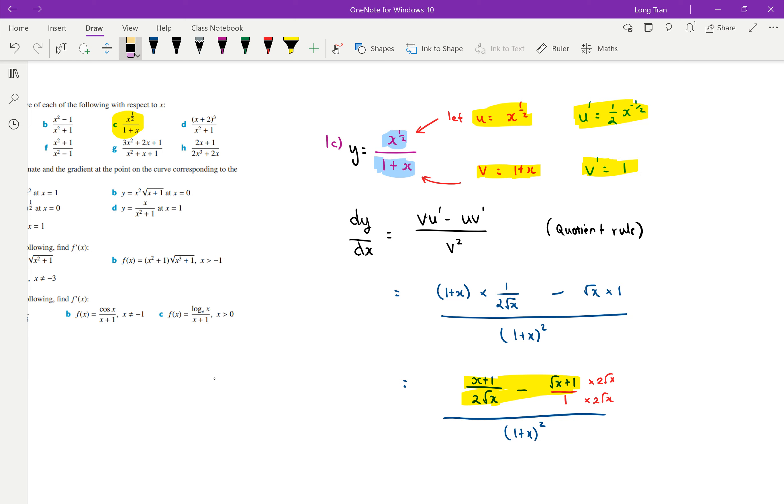So I think what's interesting is then from this step here, this is essentially what will be the problem. So you've got x plus 1 all over 2 root x minus root x.